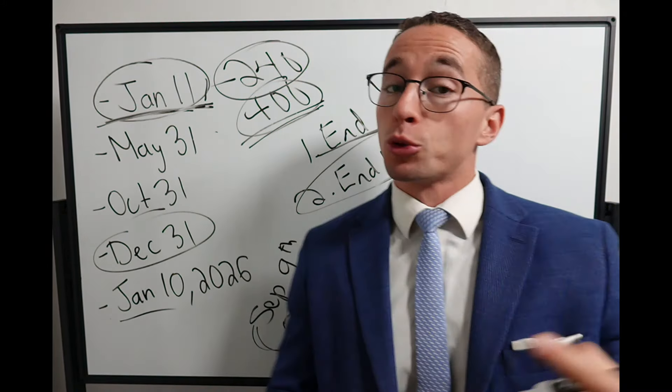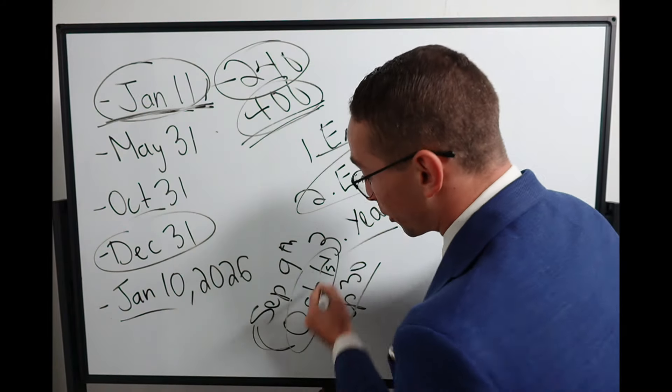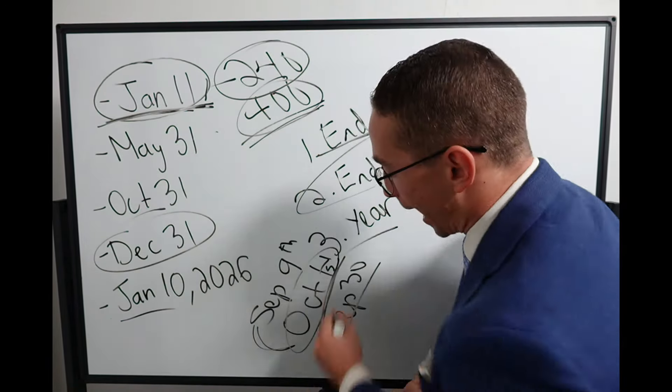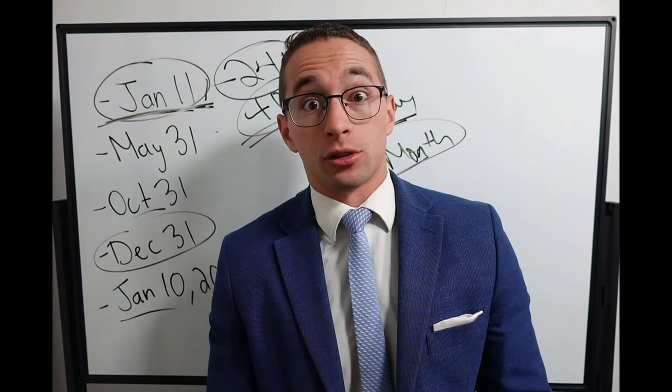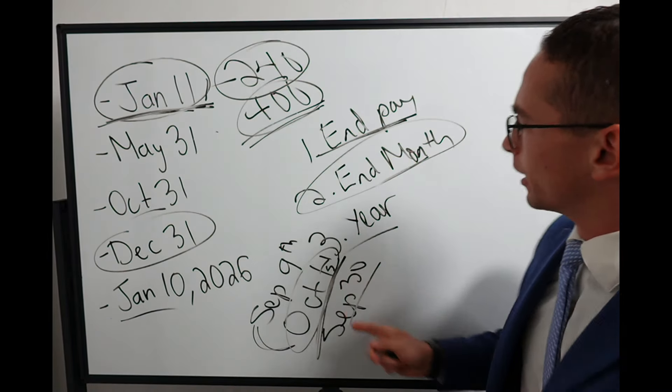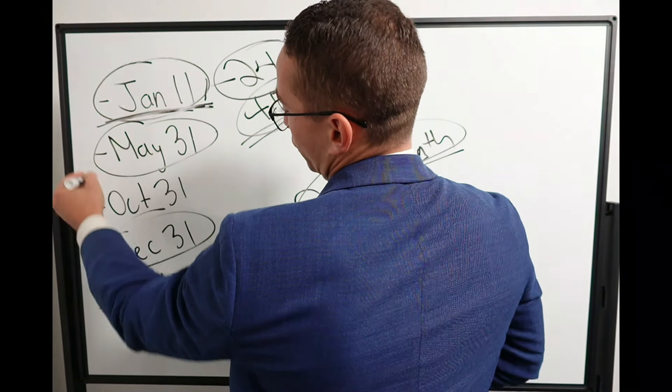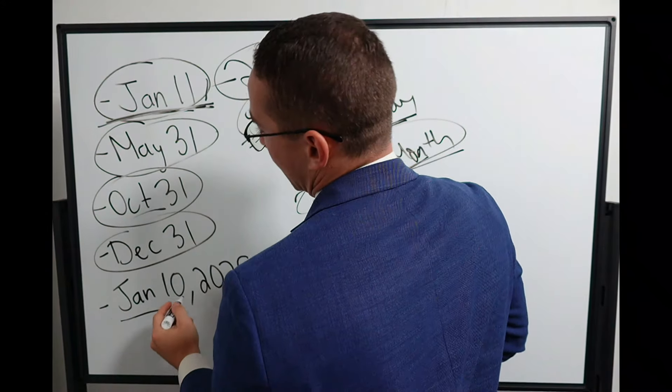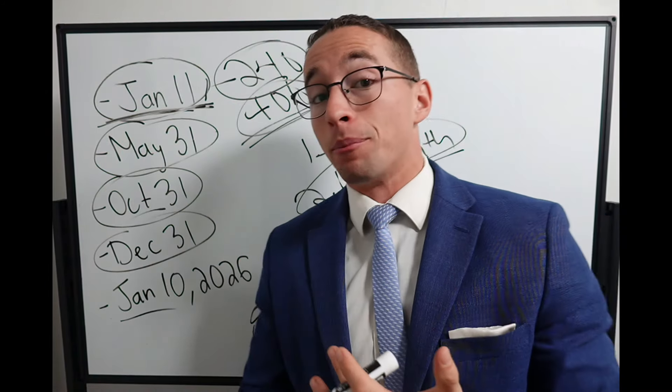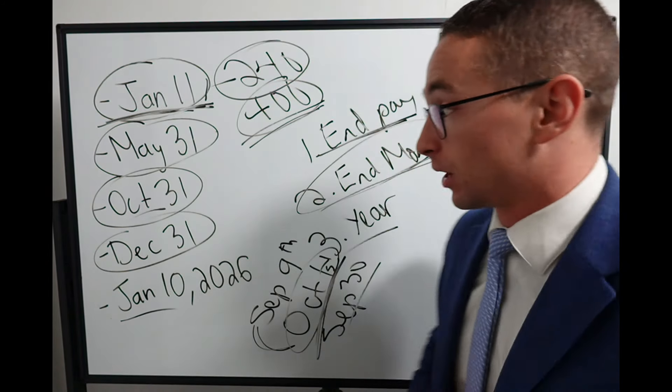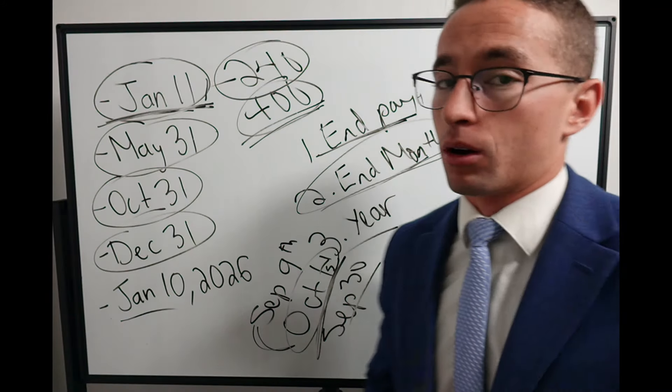Your pension takes a while to actually process. So you're not actually going to get your first check on October 1st, but they're going to back pay you back to October 1st. That is why the end of the month is so popular. May 31st and October 31st are both the end of a month and they are the end of a pay period.